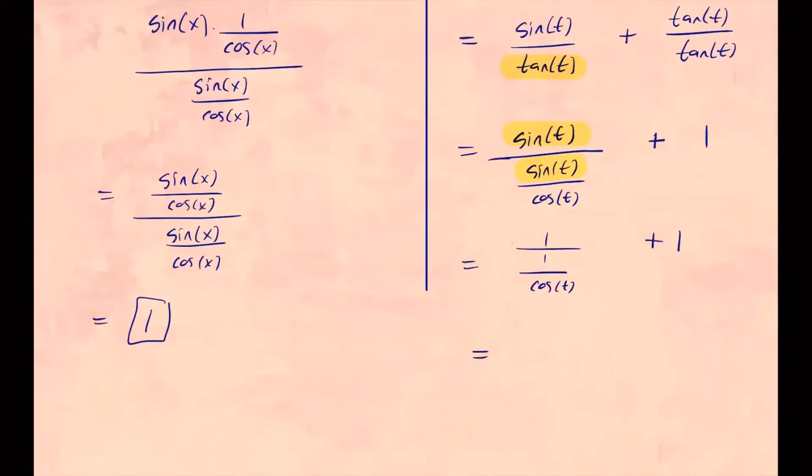And 1 over 1 over cosine, that's just cosine t, keep change, flip, plus 1. So this simplifies to just cosine t plus 1.